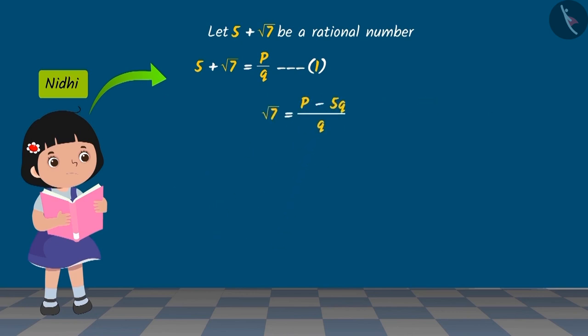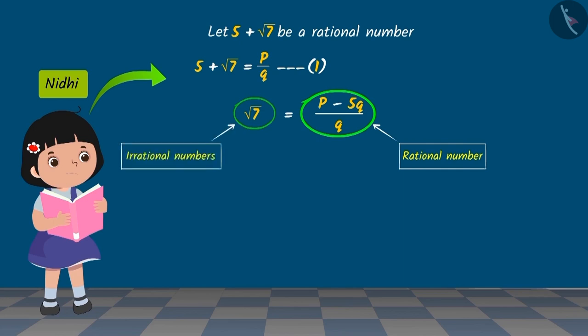Since the difference of rational numbers is also a rational number, we can say that since P and Q are rational numbers, then P minus 5Q upon Q on the right side is also a rational number. But the square root of 7 on the left side is an irrational number. But this is impossible because irrational numbers cannot be equal to rational numbers.